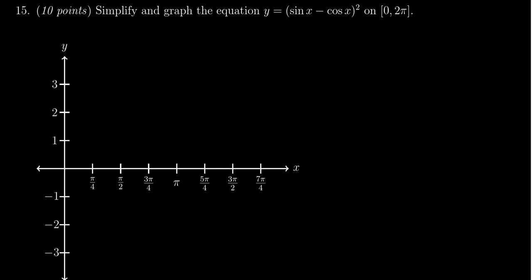So in order to graph this, we do want to first simplify it. My first suggestion is let's take y equals and then we're going to FOIL this thing out. So we're going to end up with sine squared x, we're going to get negative 2 sine x cosine x, and then we're going to get positive cosine squared.